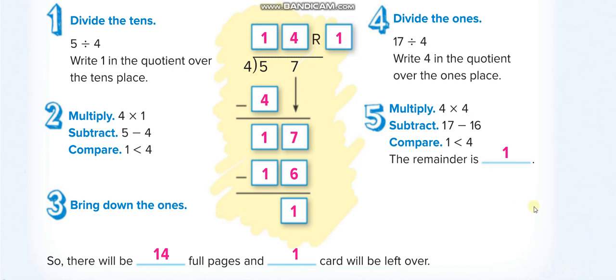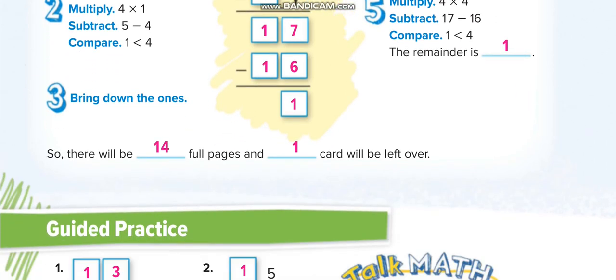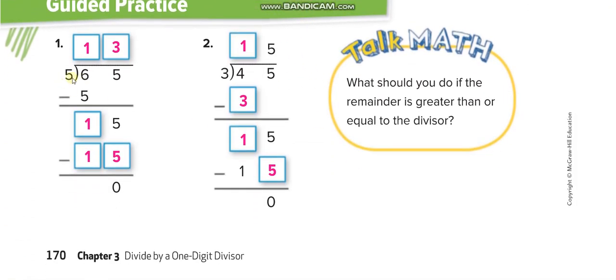Next example here: 65 divided by 5. So 5 times 1 is 5. 6 minus 5: 1. We bring this 5 down. 5 times 3: 15. 15 minus 15: 0, no remainder. 45 divided by 3. 3 times 1: 3. 4 minus 3: 1. Bring this 5 down. 3 times 5: 15. 15 minus 15: 0, no remainder.